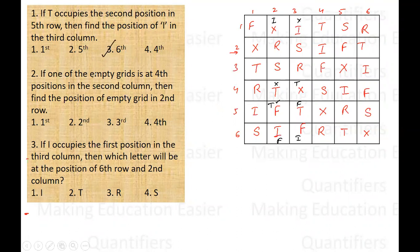Question 2: If one of the empty grids is at the fourth position in the second column, you again look at the black color arrangement. The question asks for the position of the empty grid in the second row — and since we already know the empty grid in the second row is the first position, it has no impact and the answer remains the first position.